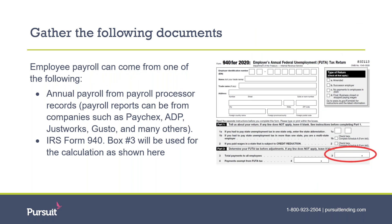In addition to the owner's compensation from Schedule K-1, we will also utilize the employee payroll that the company pays. The best source for understanding annual employee payroll is from a third-party payroll processing company such as ADP, JustWorks, Gusto, or Paychex. If you have a third-party payroll processor, ask them to provide you with a Paycheck Protection Program application payroll summary.